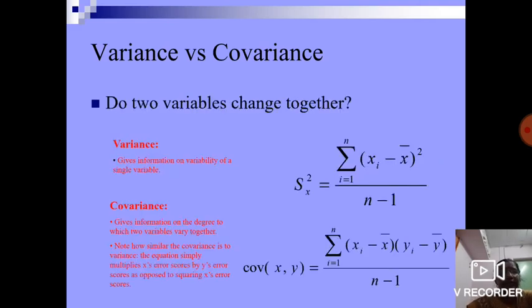Do two variables change together? Variance gives information on variability of a single variable. Covariance gives the information on the degree to which two variables vary together. Note how similar covariance is to variance. The equation simply multiplies x error and y's error scores as opposed to squaring x error scores. s squared equals summation (xi minus x̄) squared divided by n-1. Covariance of (x,y) equals summation (xi minus x̄)(yi minus ȳ) divided by n-1.